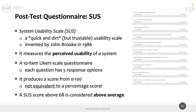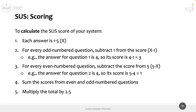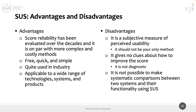We also saw a post-test questionnaire that is widely used and highly reliable — the System Usability Scale — which measures the perceived usability of a system from a generic perspective. We saw the questions, how to calculate the SUS score, and its advantages and disadvantages, including the fact that it's not diagnostic, it's a subjective measure, and it's not possible to make comparisons between two SUS results. So it should not be your only measure.